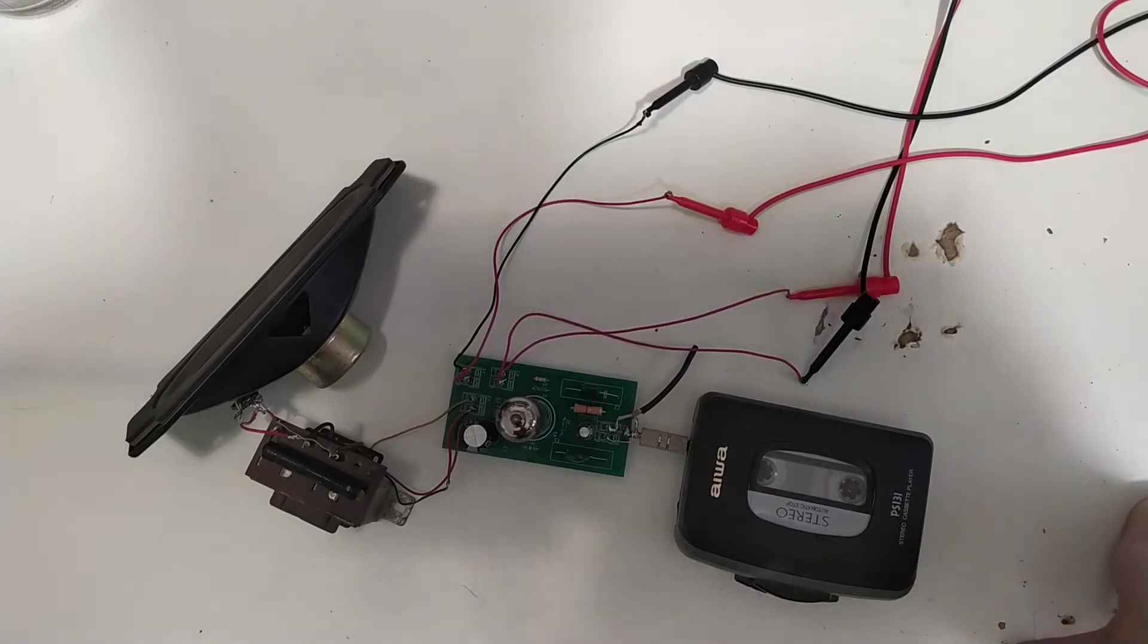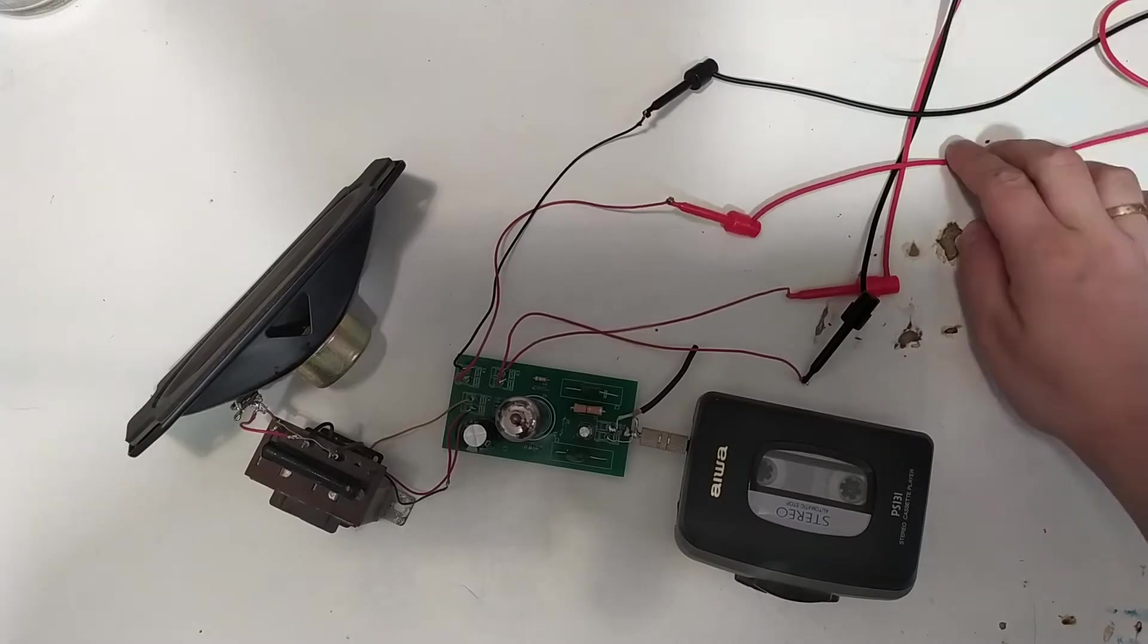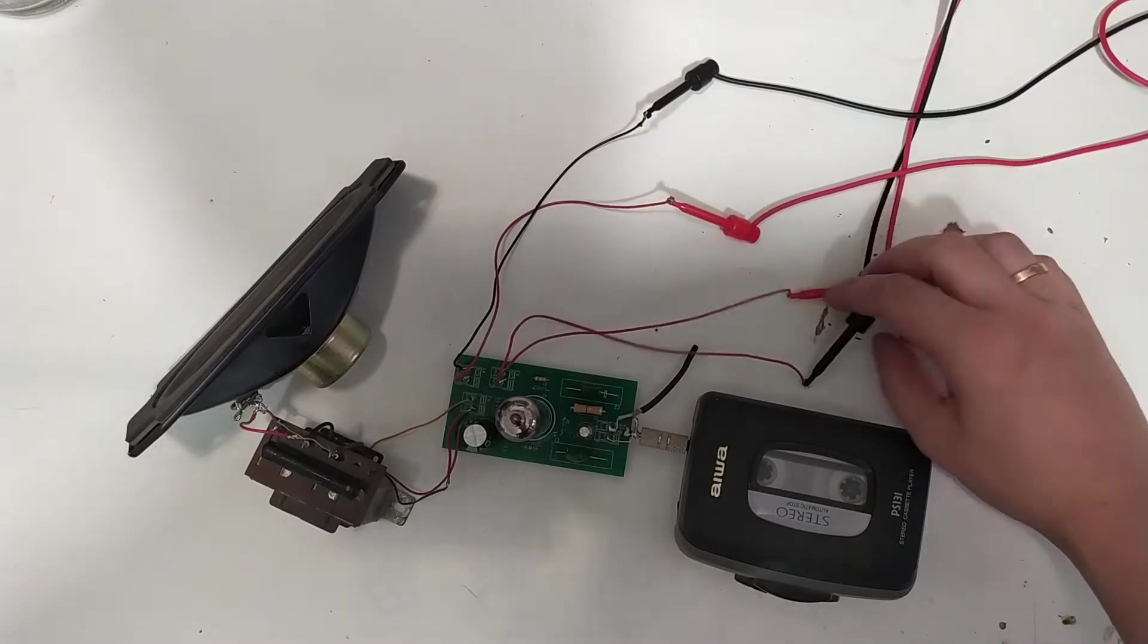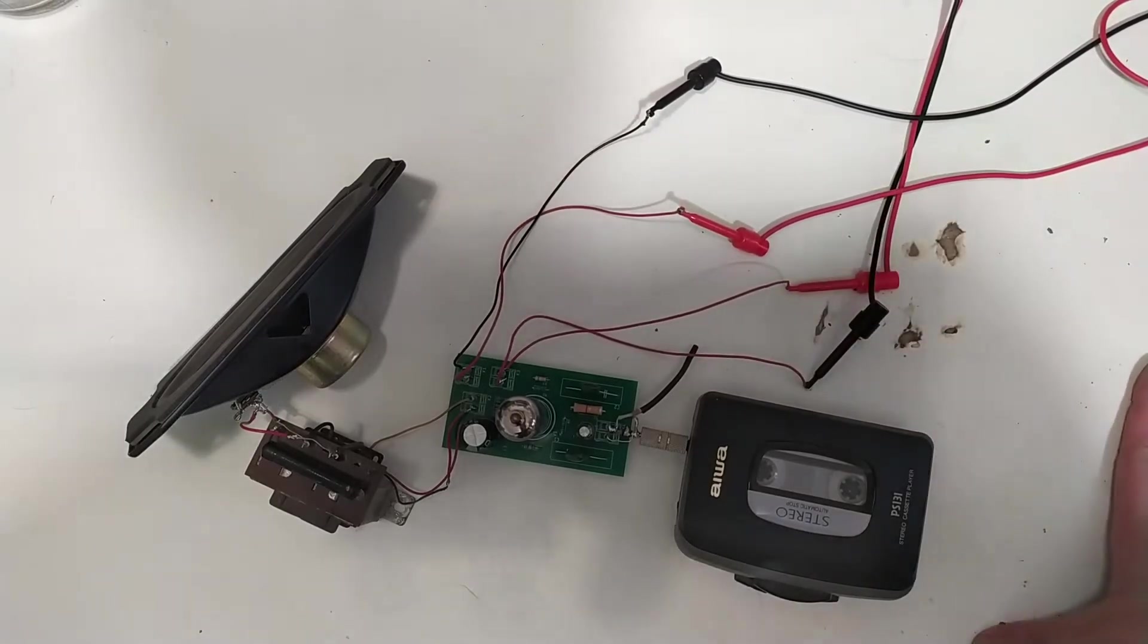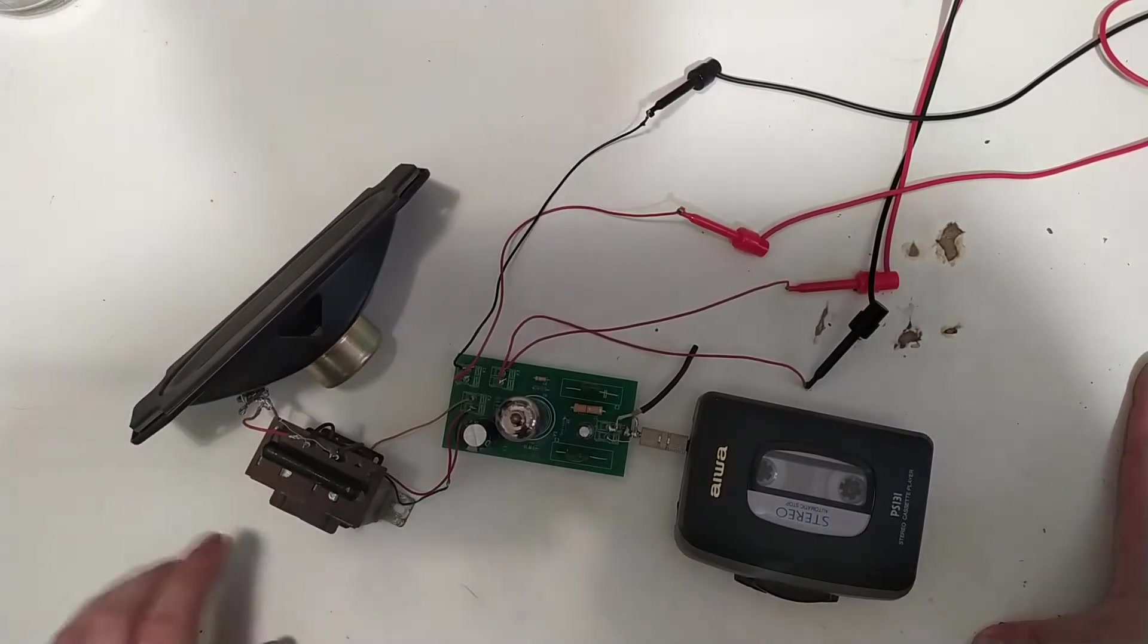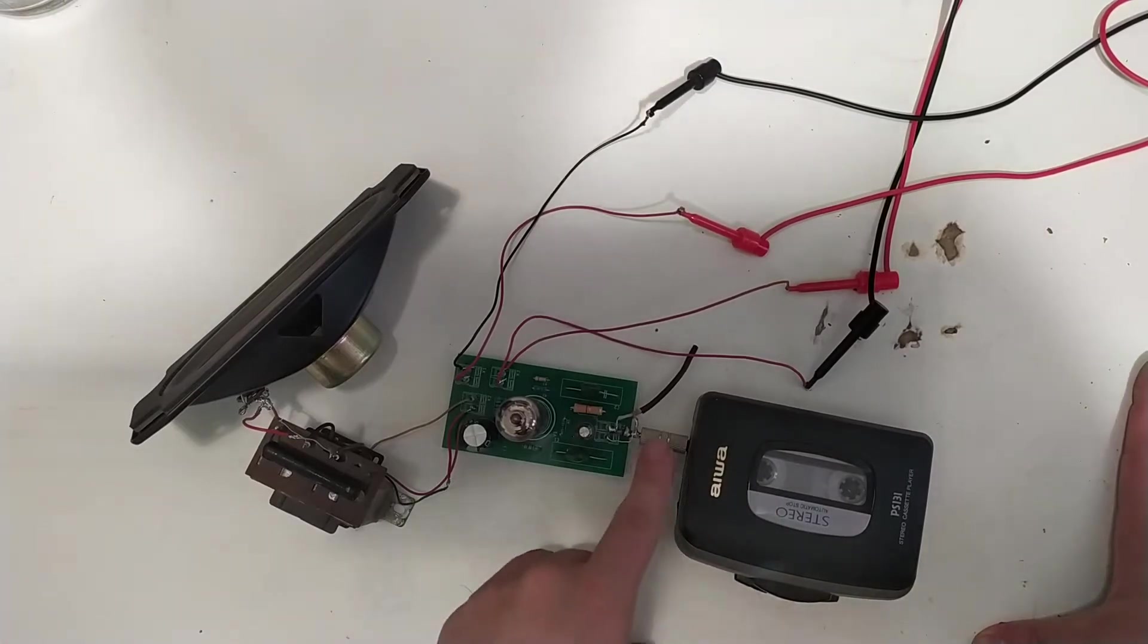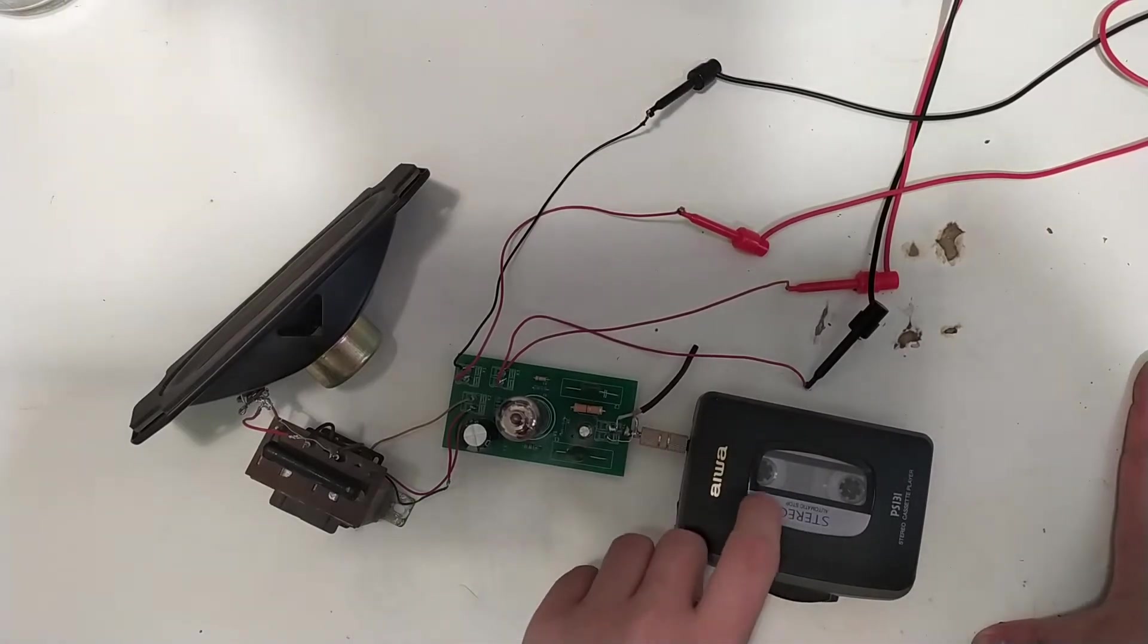So we're back on the PCL82 amplifier project. It's hooked up to the power supply B+. The heating voltage is coming from another lab power supply. It has a speaker and a radio output transformer connected to it, and it's fed via this crude adapter here from this cassette player.